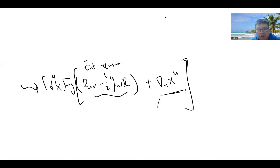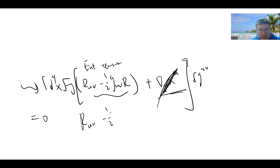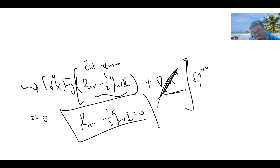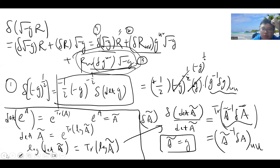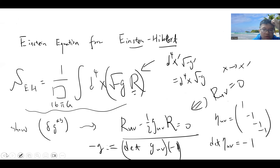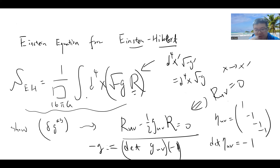After all this calculation, the variation becomes the Einstein tensor G_{UV} = R_{UV} − ½ g_{UV} R plus a total derivative, which we discard. Setting the variation to zero gives us R_{UV} − ½ g_{UV} R = 0, which is the Einstein field equation in vacuum. This is called the Einstein tensor, and this completes the derivation of why the Einstein-Hilbert action gives the Einstein field equation. See you in the next video.